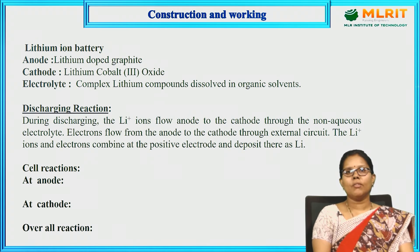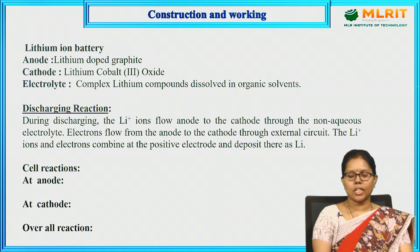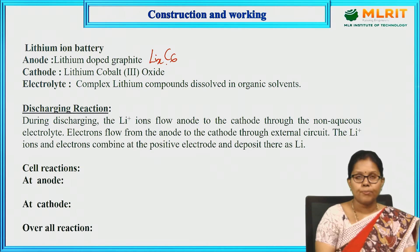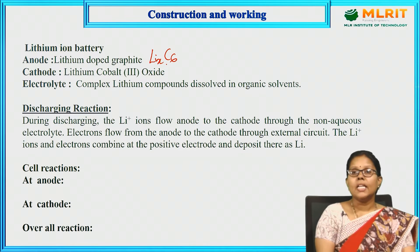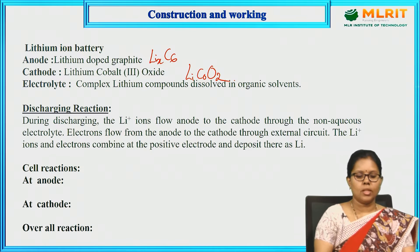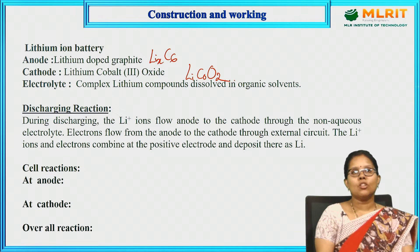The construction of the lithium ion battery consists of an anode, cathode, and electrolyte. The anode is lithium-doped graphite, LixC6. The cathode is lithium cobalt oxide, LiCoO2. The electrolyte used is non-aqueous.